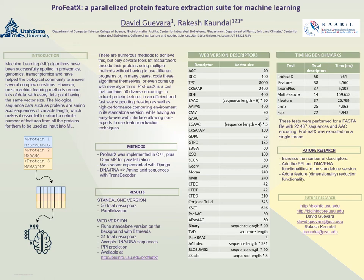Throughout the years, researchers have come up with numerous methods to do this with varying lengths, and there are multiple suites that compile such methods. With ProfitX, we aimed for the highest number of methods while also making it fast. When encoding just a few thousand sequences speed isn't that important, but some algorithms are heavy in calculations, so when you want to encode hundreds of thousands or even millions, speed becomes quite relevant.